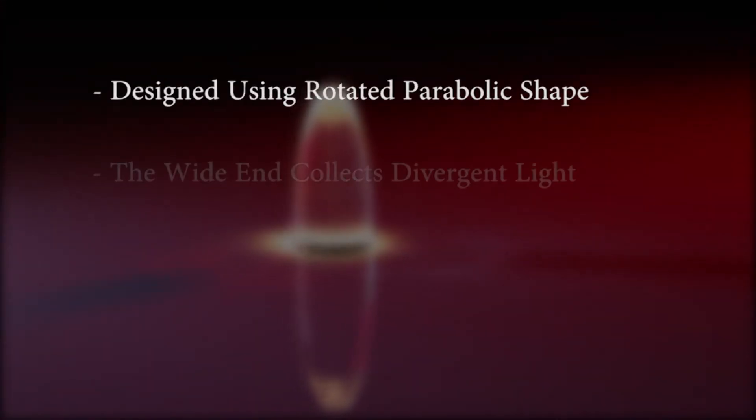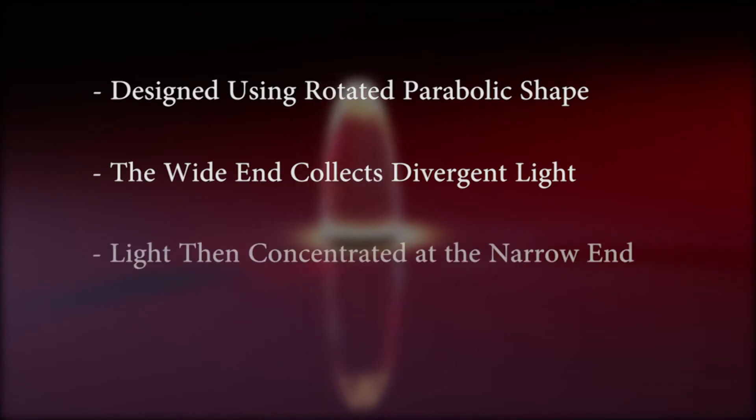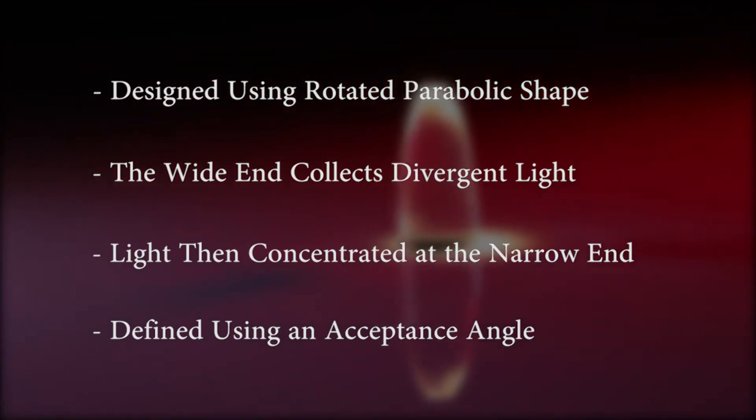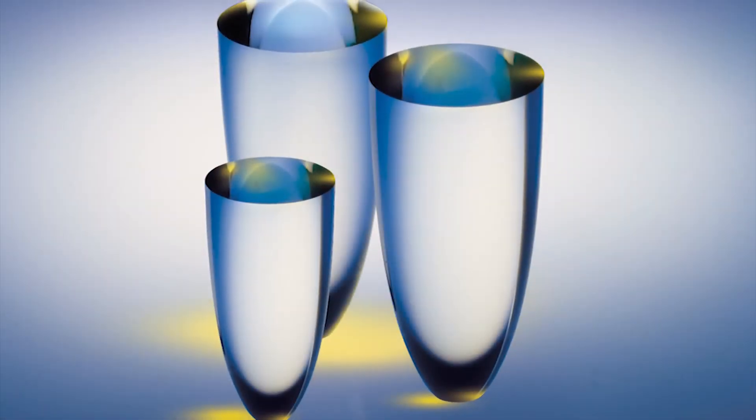A CPC is a concentrator designed using a rotated parabolic shape. The wide end of a CPC collects divergent light, which is then reflected within the CPC and concentrated at the narrow output end.